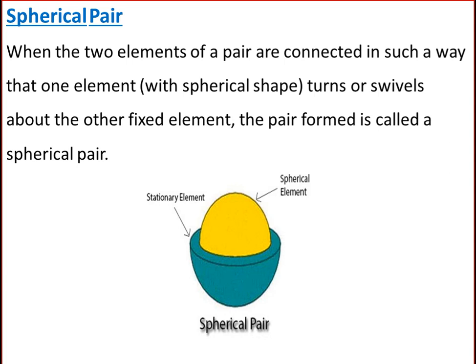Next is a spherical pair. When two elements of a pair are connected such that one element with a spherical shape turns or swivels about the other fixed element, the pair is called a spherical pair. The ball and socket joint, attachment of a car mirror, and paint stand are examples of a spherical pair.